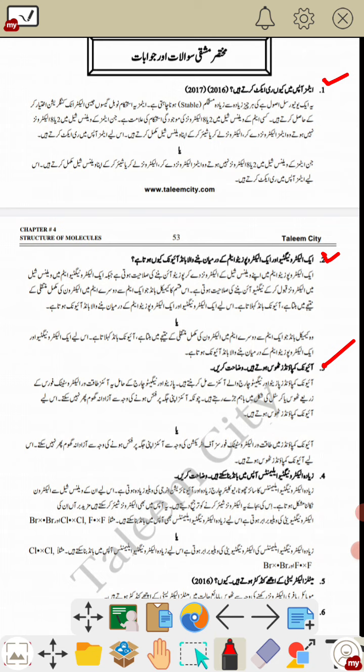Ionic compounds form three-dimensional crystal lattices, making the ionic bonds between them very strong. Question 4: more electronegative elements can form bonds with each other because their ionization energies are similar, allowing them to share electrons and bond together.